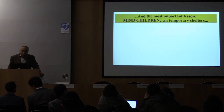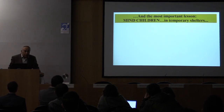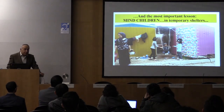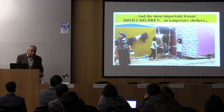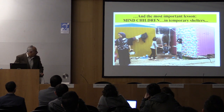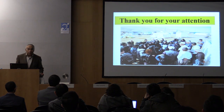Children are the most important asset for us. This is Kermanshah, and this is a temporary shelter. Children are the most vulnerable people after a disaster, and even in a temporary shelter, they must be able to be children. Thank you very much.